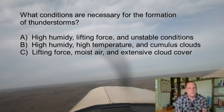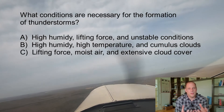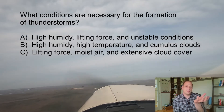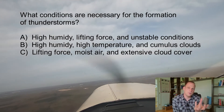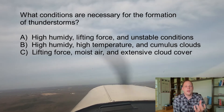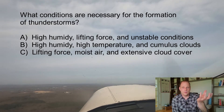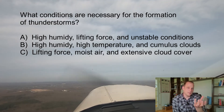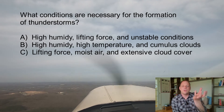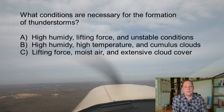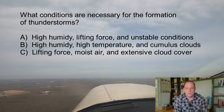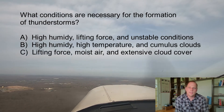Unstable air means that a portion of the air is warmer than the surrounding air. So as it rises, even though it might cool, it will still be warmer and less dense than the surrounding air, allowing it to rise even further. As air is displaced, it will continue to move in that displaced direction instead of returning to its original position.